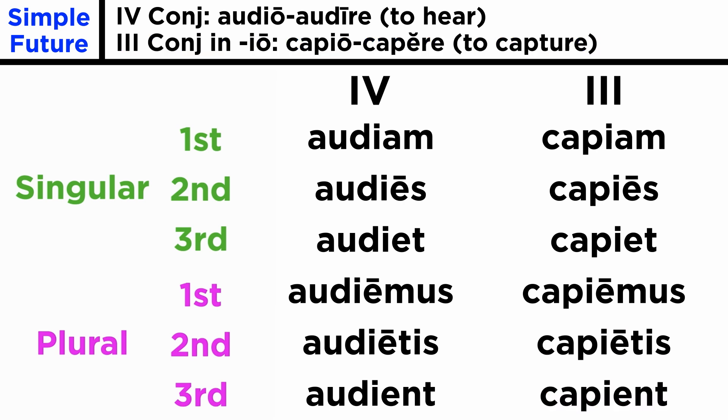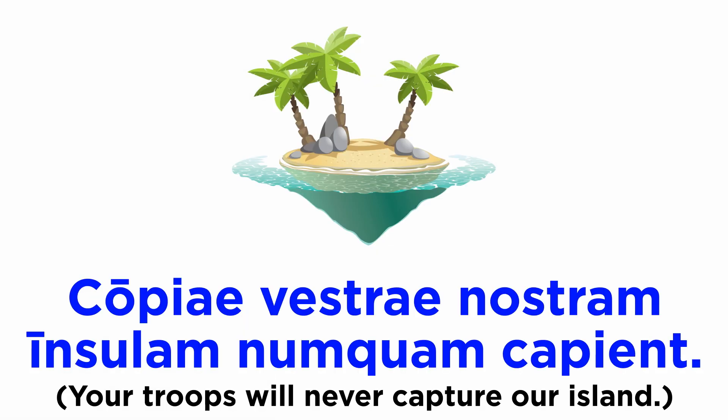That was pretty straightforward, so let's put these forms into sentences. copiae vestrae nostram insulam numquam capient.